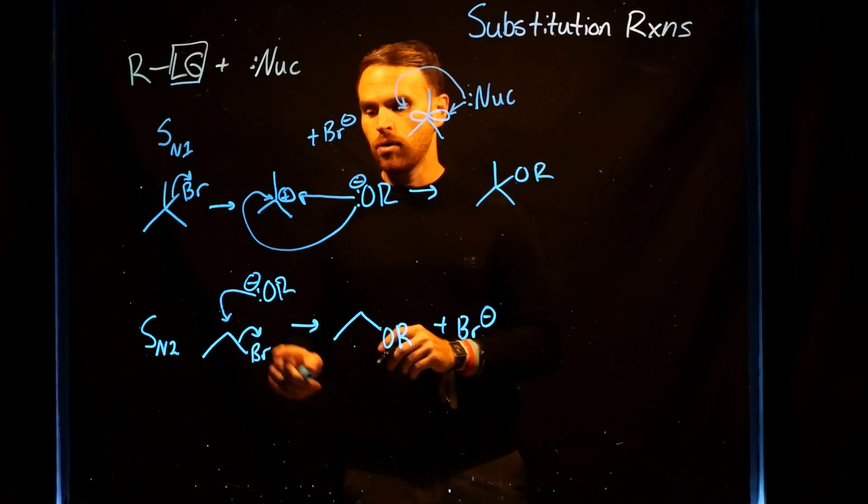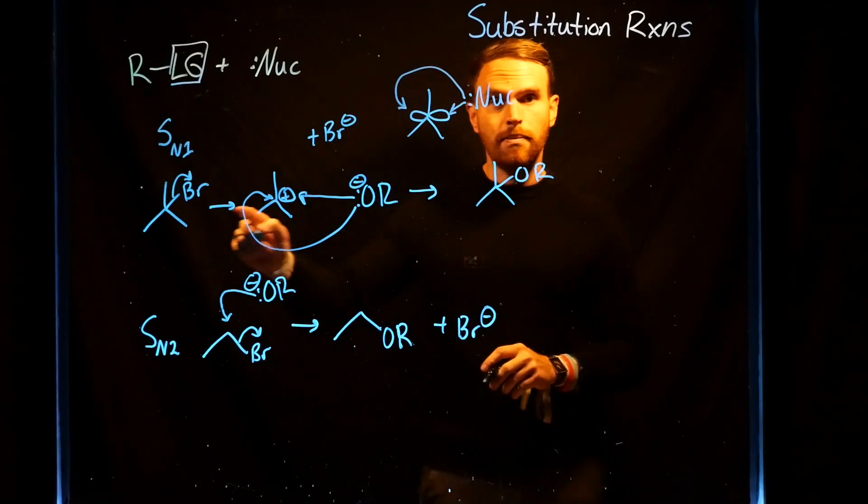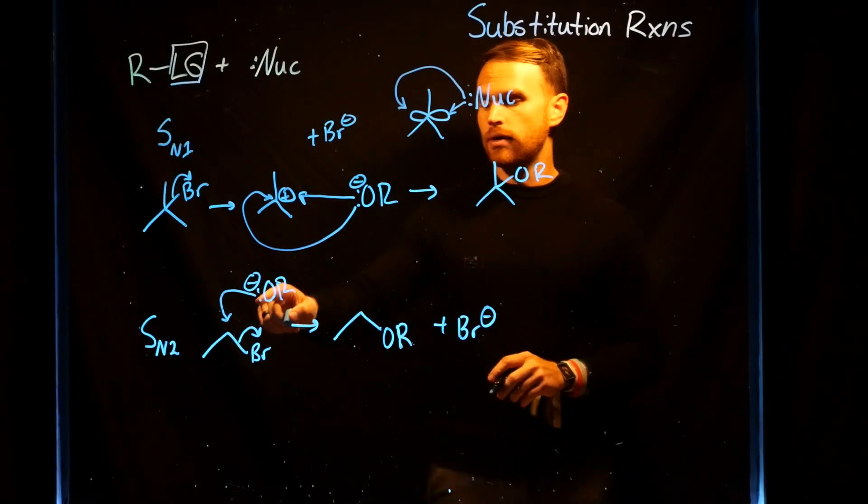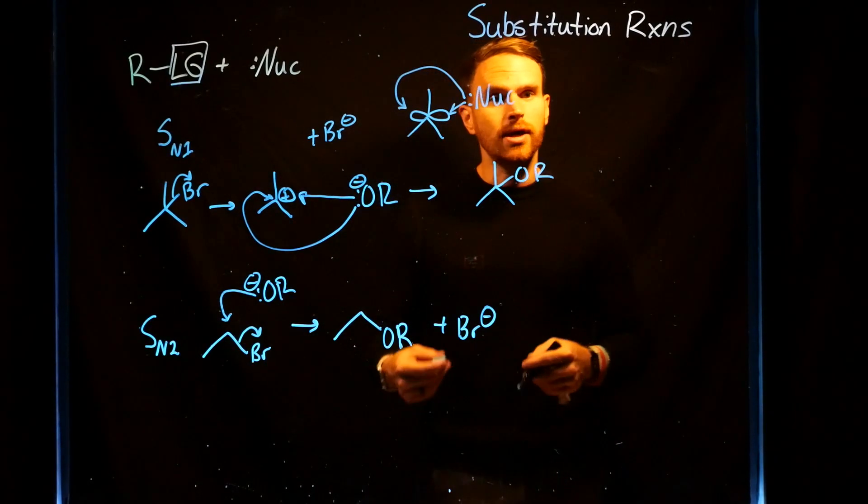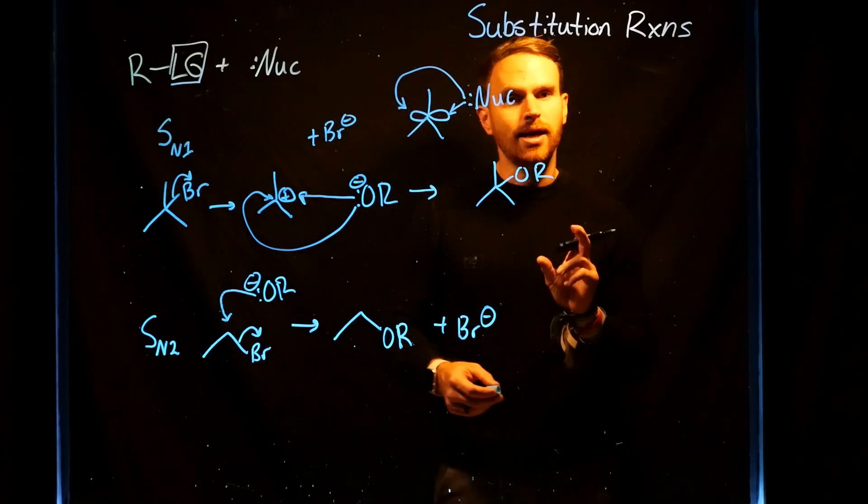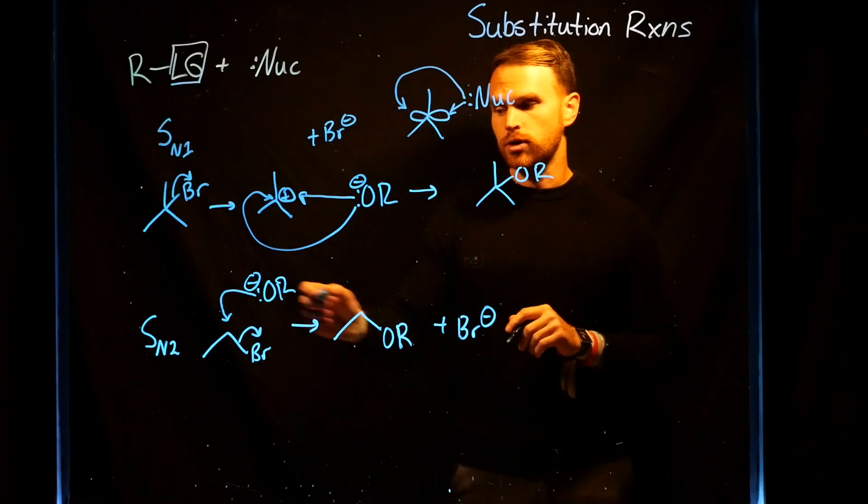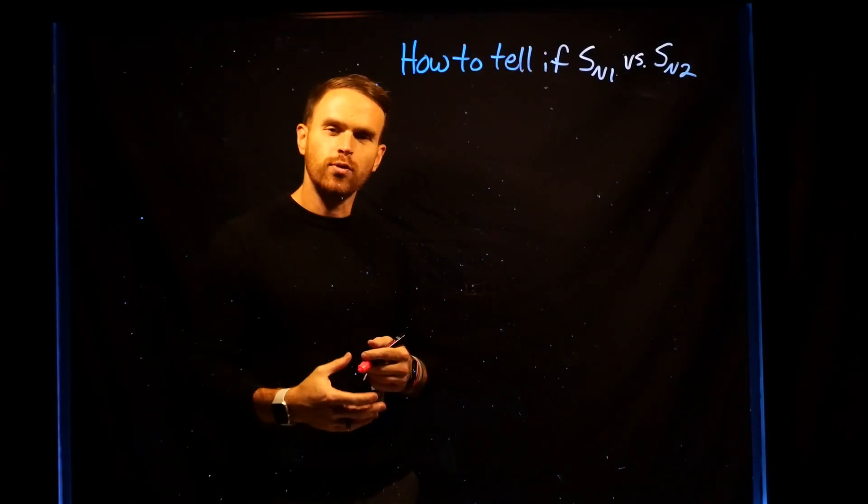Notice, however, that SN2 reactions happen via what's called backside attack, where the nucleophile cannot come in from the same angle. So if you had or were generating a stereocenter, you would get inversion of the stereochemistry when doing an SN2 reaction.